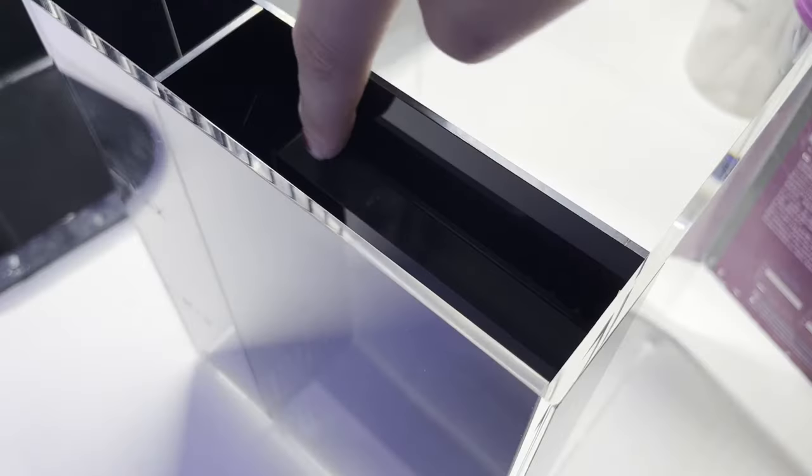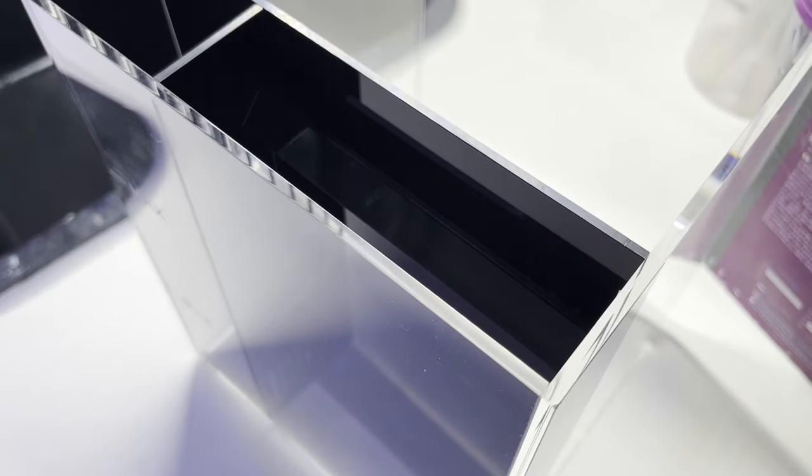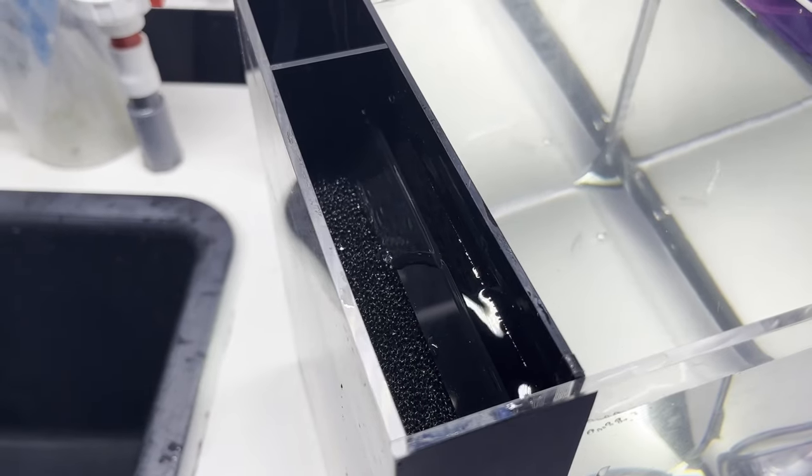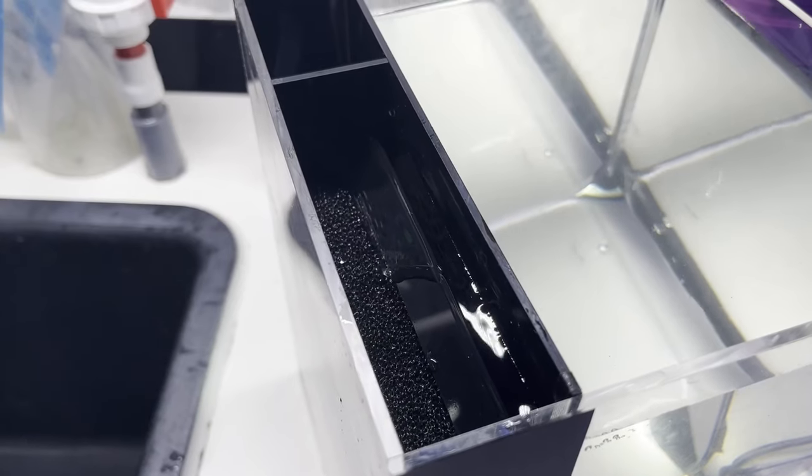You will also see the slit at the top. This is to provide aeration of the water and also to spread the flow of the incoming water evenly over the sponges and ceramic rings.